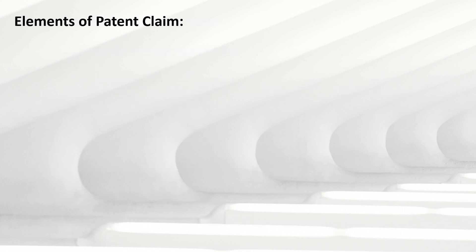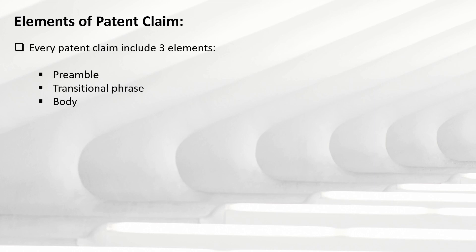Now let's look at the elements of a patent claim. Elements of a patent claim are defined by the patent office and must be followed when writing a claim. A patent claim includes three elements: the first is the preamble, then there is the transitional phrase, and then there is the body.